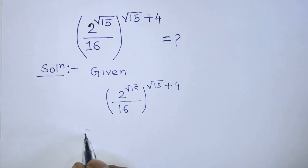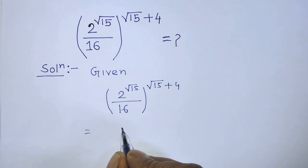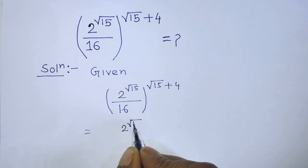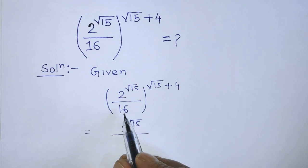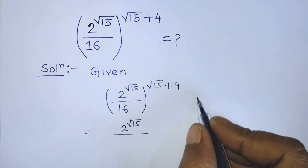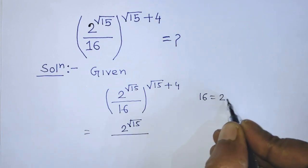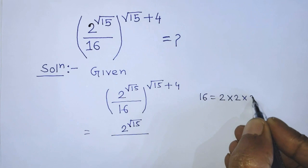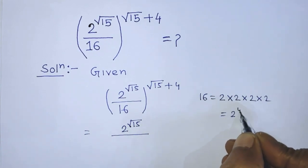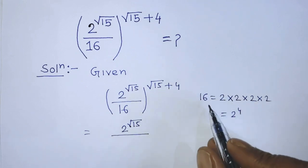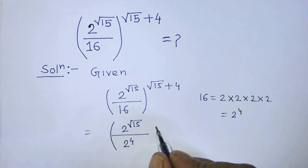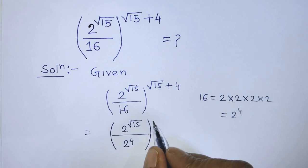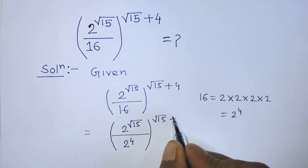We can write from this algebraic expression 2 to the power the square root of 15 in the numerator. In the denominator, we write the exponential form of 16. We know that 16 equals 2 times 2 times 2 times 2, that is 2 to the power 4. So we write 2 to the power 4, whole to the power the square root of 15 plus 4.